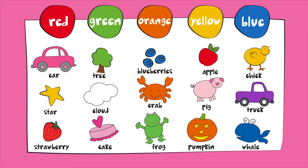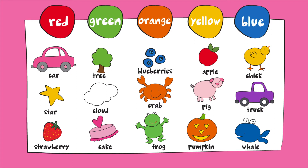Do you see the strawberry and the apple that are red? Can you find all the things on this page that are green? Like a tree? And do you see the frog? Can you find all the things on this page that are orange? There's a crab and a pumpkin — can you find them?